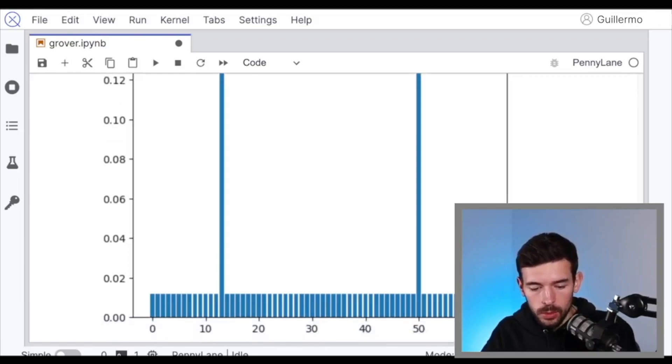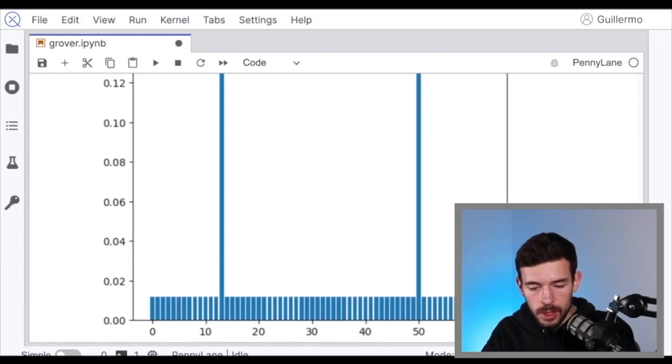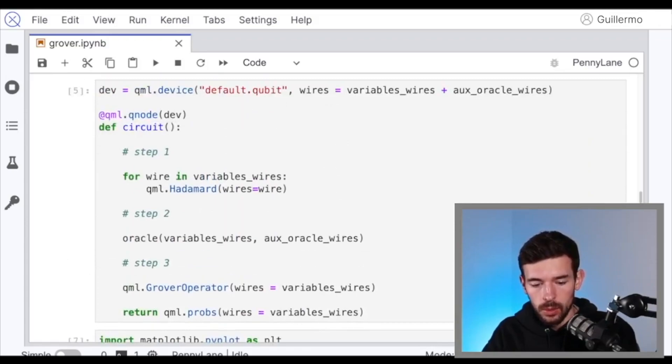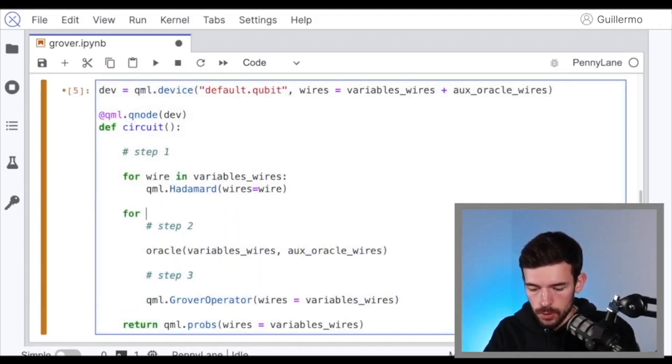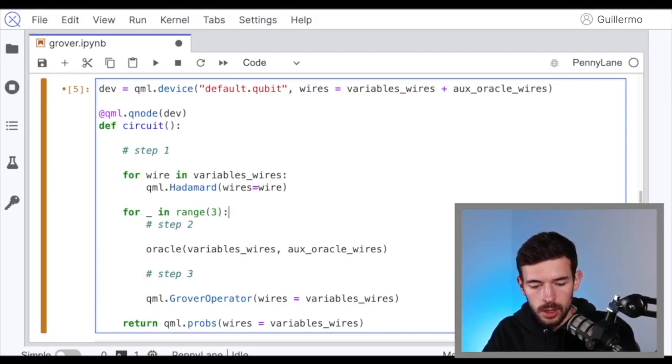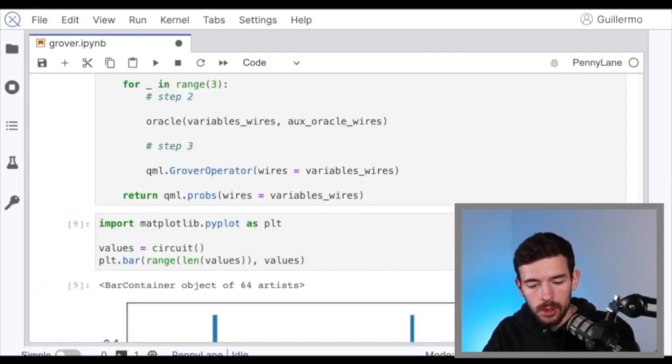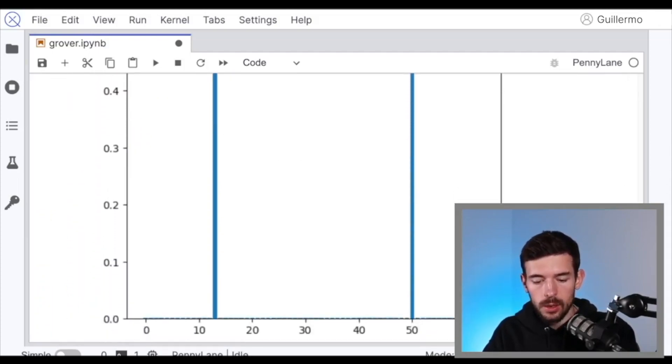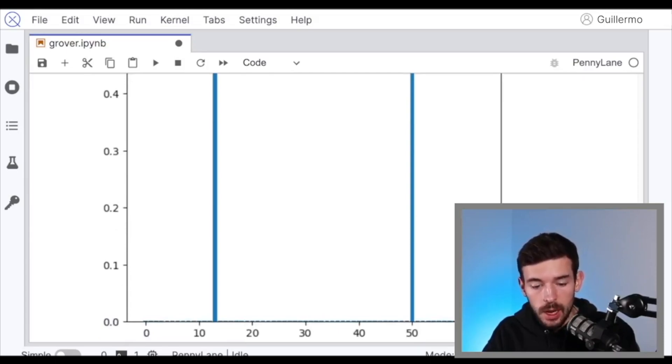But something that we can do to improve the probability of seeing these good solutions, because now it's almost 14%, is repeat the second and the third step. In our case, what we can do now is for in range 3, we are going to repeat 3 times this process. Let's apply the oracle and then the Grover amplifier. We get now these states that basically now the chance of seeing one of the true values of these perfect configurations are 45% each.